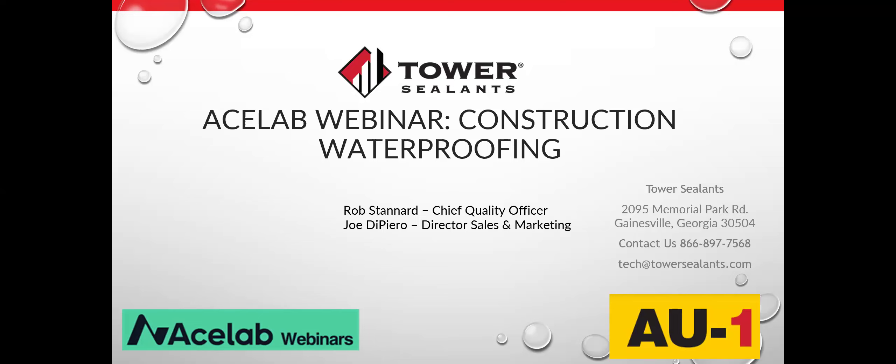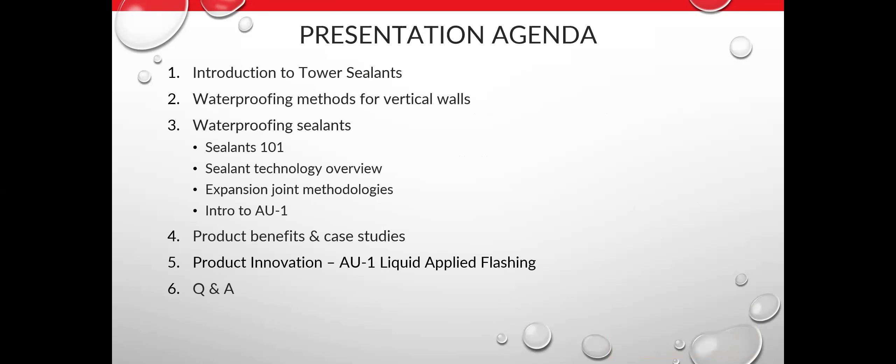My name is Joe DiPiro, Director of Sales and Marketing at Tower Sealants. With me is Rob Standard, our Chief Quality Officer and head chemist. Today's agenda covers: an introduction to Tower Sealants, waterproofing methods for vertical walls, a deep dive on sealants and technologies, expansion joint methodologies, our AU1 commercial construction sealant with product benefits and case studies, and then our AU1 liquid applied flashing innovation, followed by Q&A.